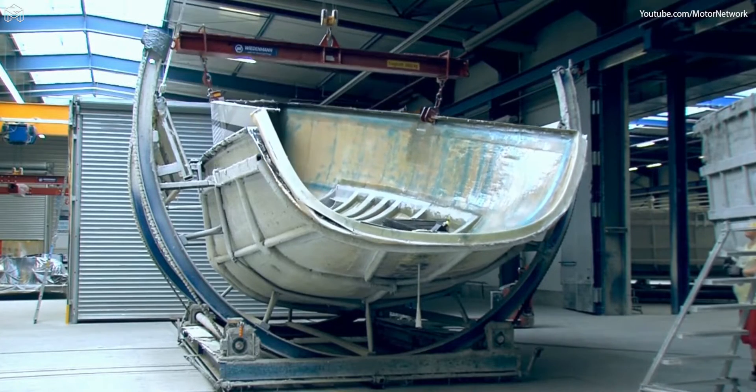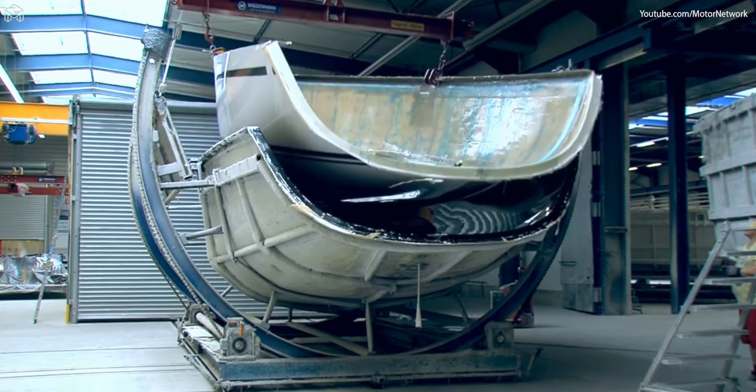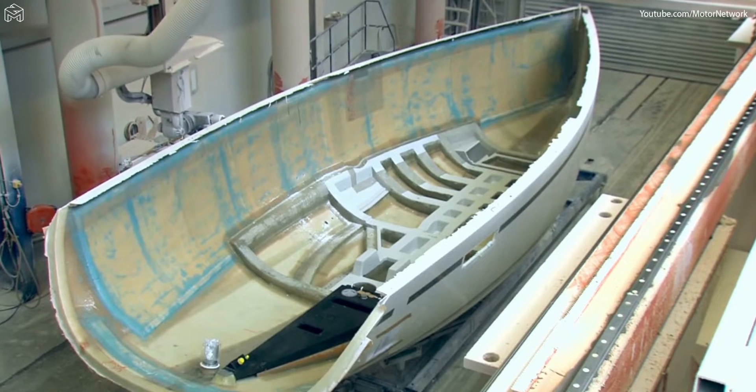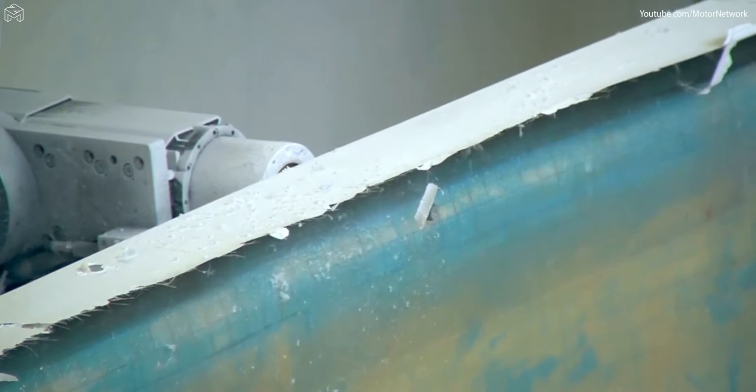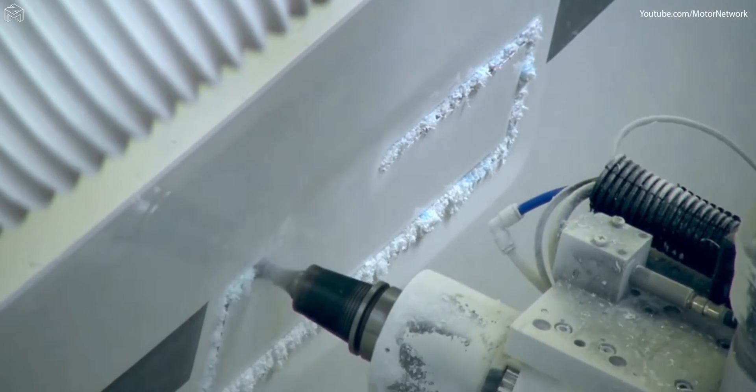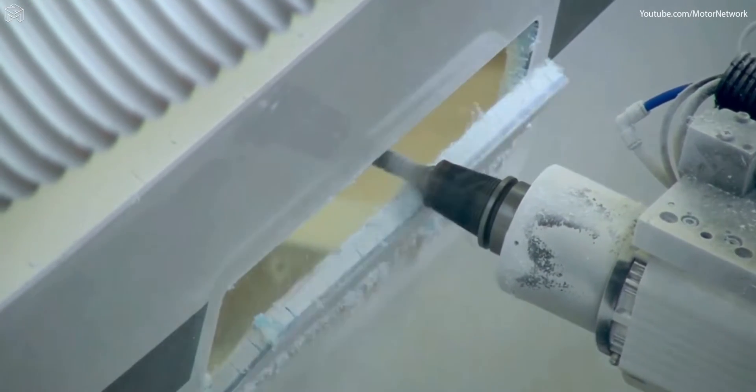As soon as the resin has hardened, the hull is carefully removed from the mold. A computerized CNC milling machine then drills the bore holes to the exact millimeter for the outboard connections, as well as for the exact fitting to the deck and the precise milling of the windows in the hull.